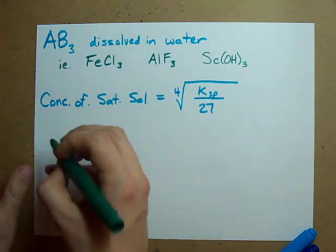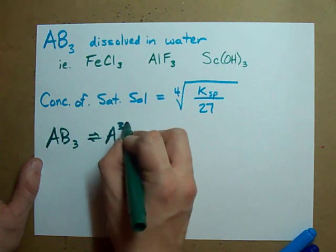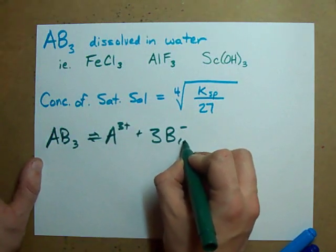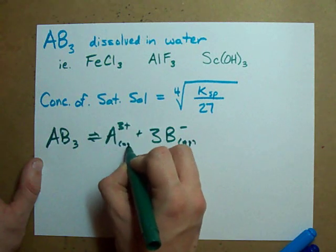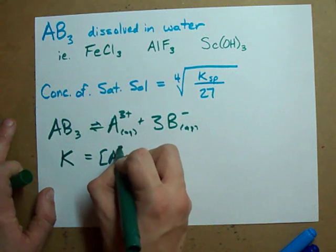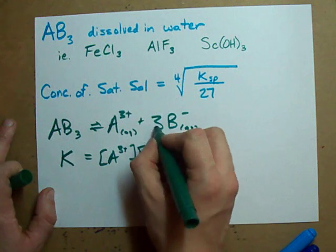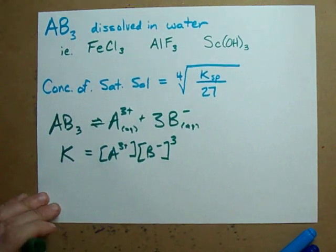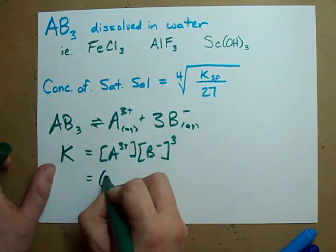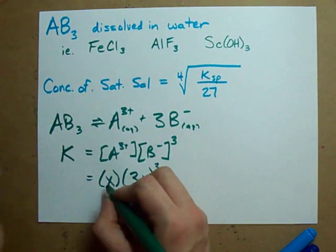Same story. When AB3 dissolves in water, you get an A ion and you get three B minus ions, both dissolved in water. Your equilibrium expression has the A in it and it has the B in it. But the B is cubed because you got three of them. Don't forget, because you're making three of them, the concentration of B is three times the concentration of A.